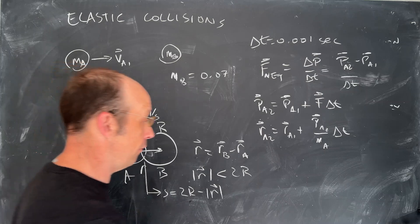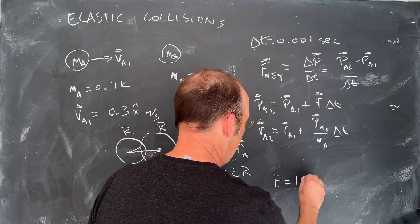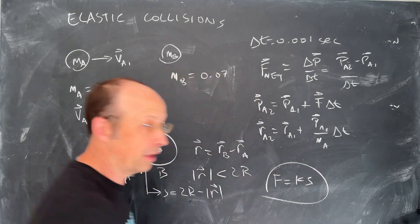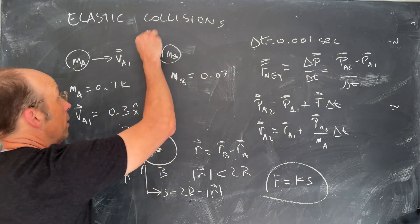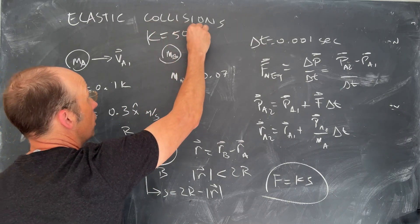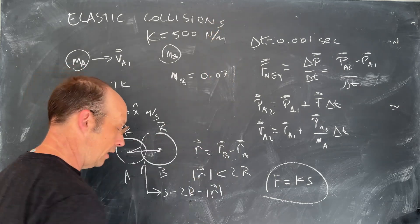And then I can use that to calculate the force F is K times S. That's my normal spring force. I do need a value for the spring constant. Let's go with 500. K is 500 newtons per meter. Let's just make this.